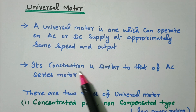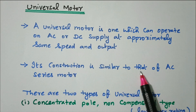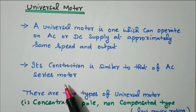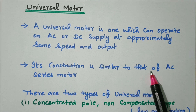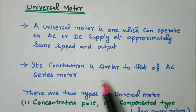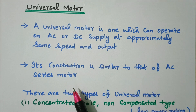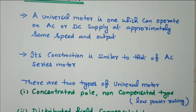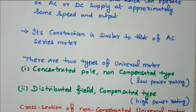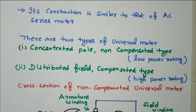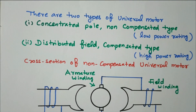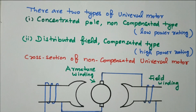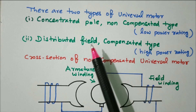Its construction is very similar to that of an AC series motor — the armature and field are connected in series, like an AC series motor. Now we'll see the types of universal motor. There are two types available.